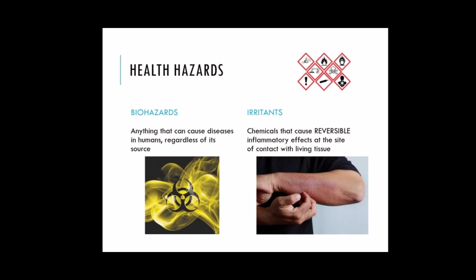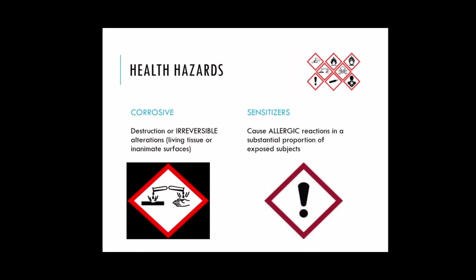Health hazards include, first, biohazards — anything that can cause disease in humans regardless of its source, including infectious agents and contaminated solutions, specimens, or objects. Irritants are chemicals that cause reversible inflammatory effects at the site of contact with living tissue, especially the skin, eyes, and respiratory passages. Corrosive chemicals cause destruction or irreversible alterations when exposed to living tissue, or destroy inanimate surfaces like metal — a chemical may be corrosive to tissue but not to steel, or vice versa.